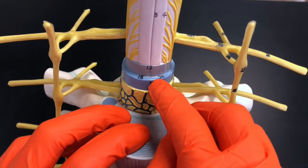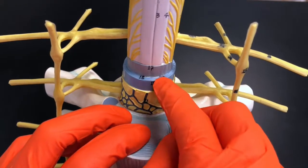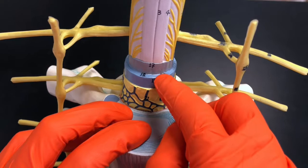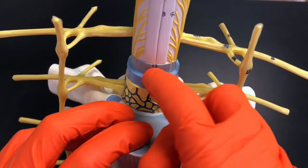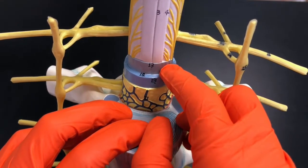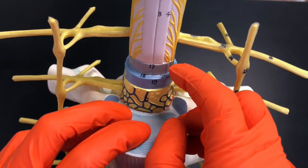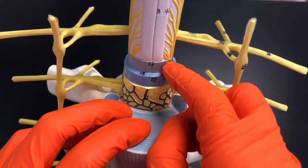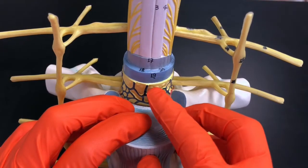So the space between the arachnoid and the pia mater is the subarachnoid space, and it's important for you to know that the subarachnoid space contains cerebrospinal fluid.